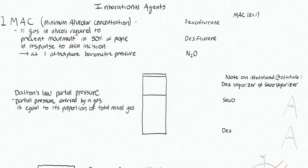One MAC is the minimum alveolar concentration — the percent of gas in the alveoli required to prevent movement in 50% of people in response to a skin incision. This was classically defined as the incision for a laparotomy, which is quite a large incision. Depending on how stimulating your procedure is in comparison, this gives you an indication of how likely a person is to move.